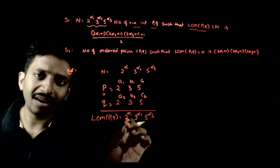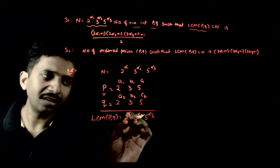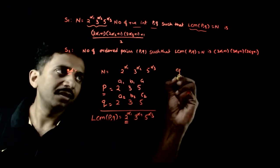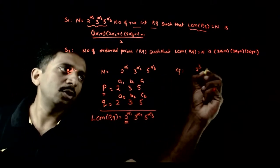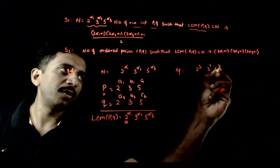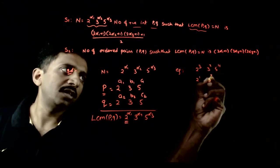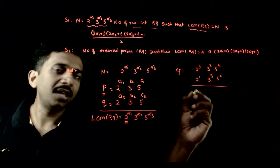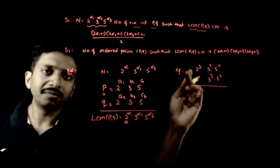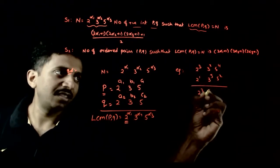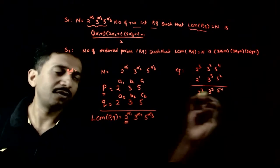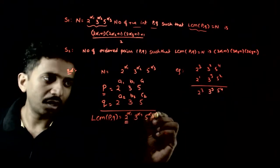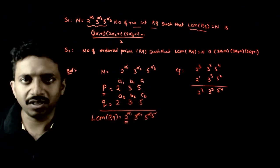For example, take the number 2³ · 3² · 5⁴ and another number 2¹ · 3³ · 5². The LCM is 2³ · 3³ · 5⁴ — the highest power of each prime from both numbers. In the LCM, what you get is the highest power of each prime across the two numbers.